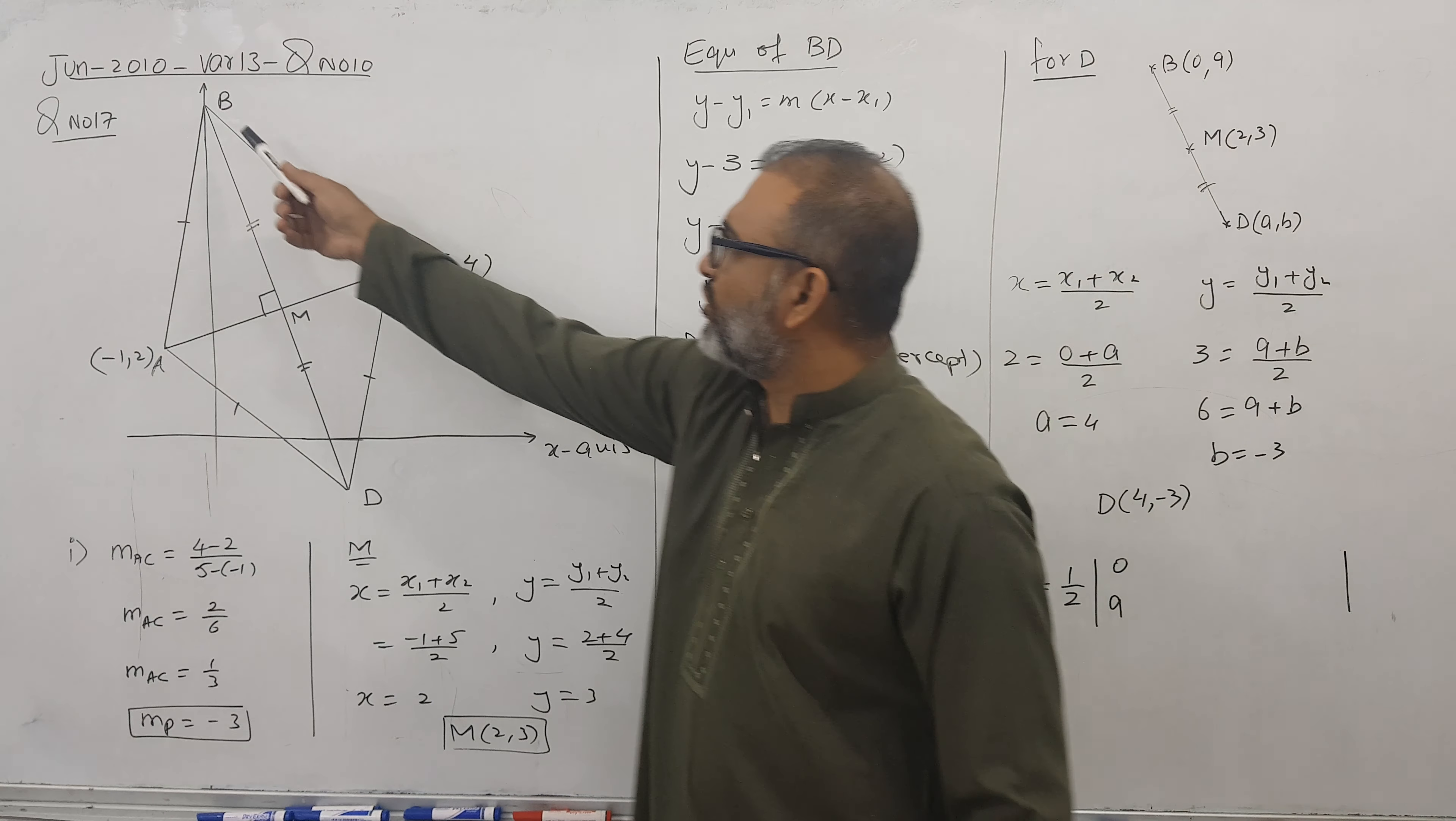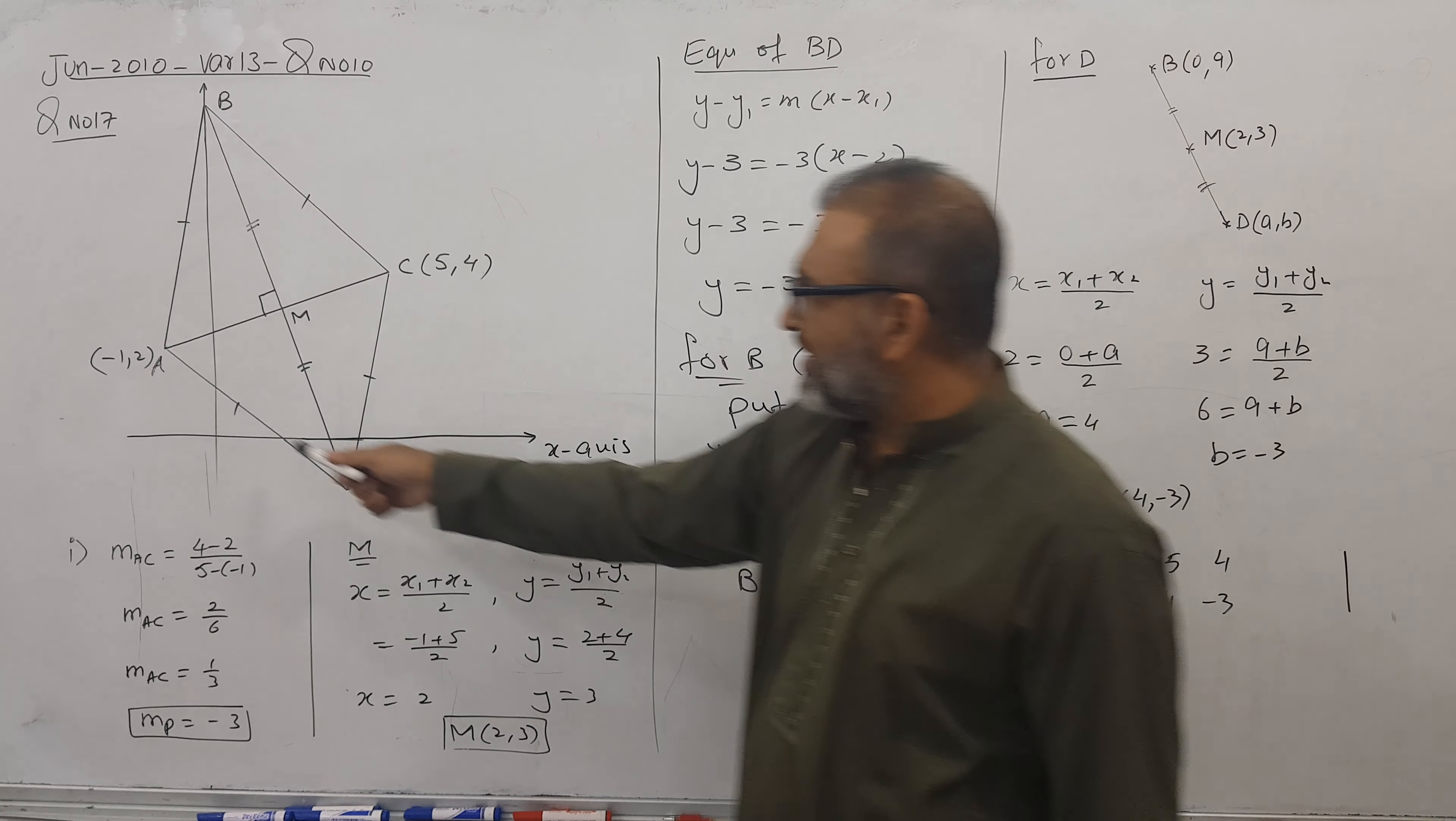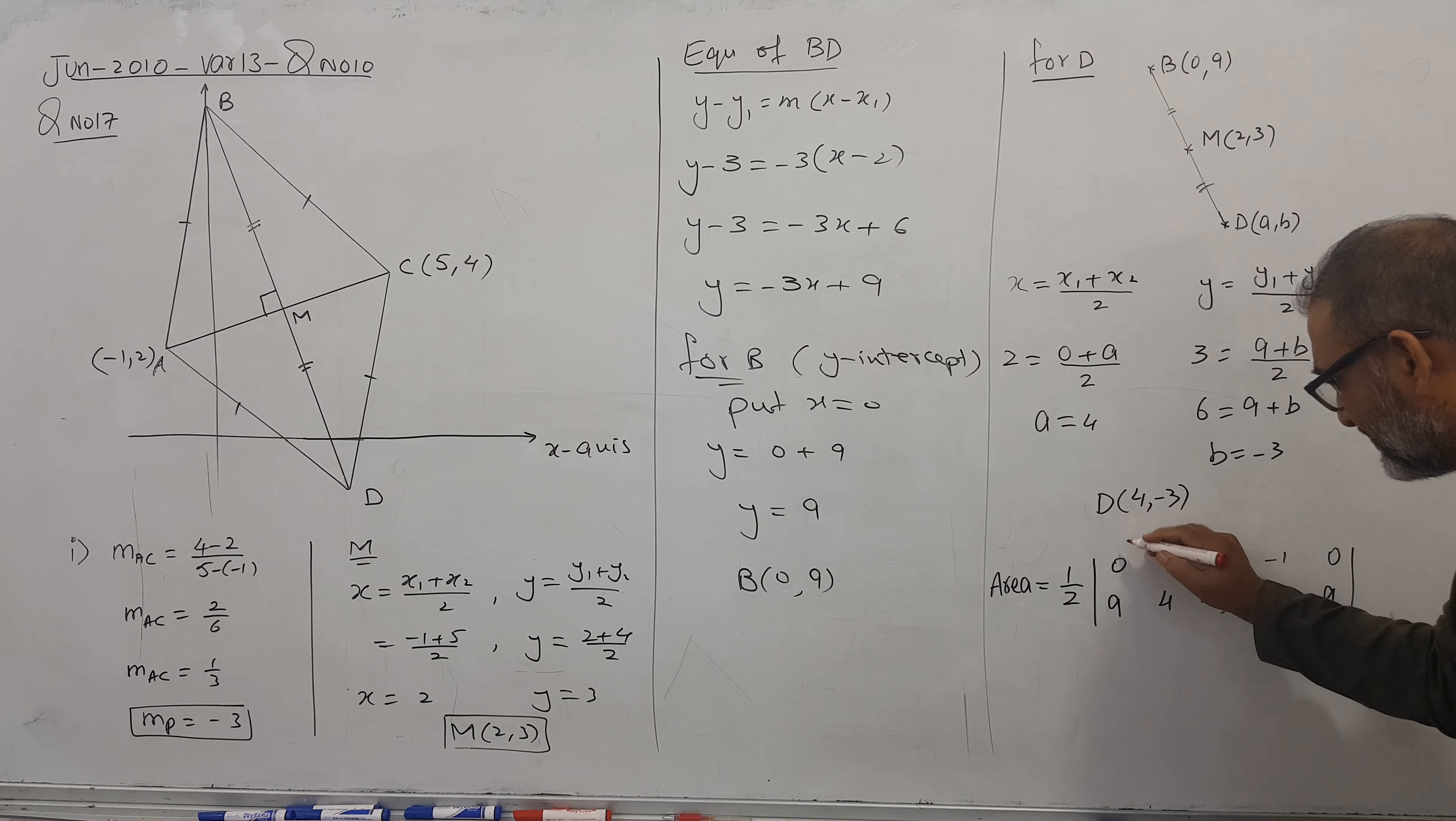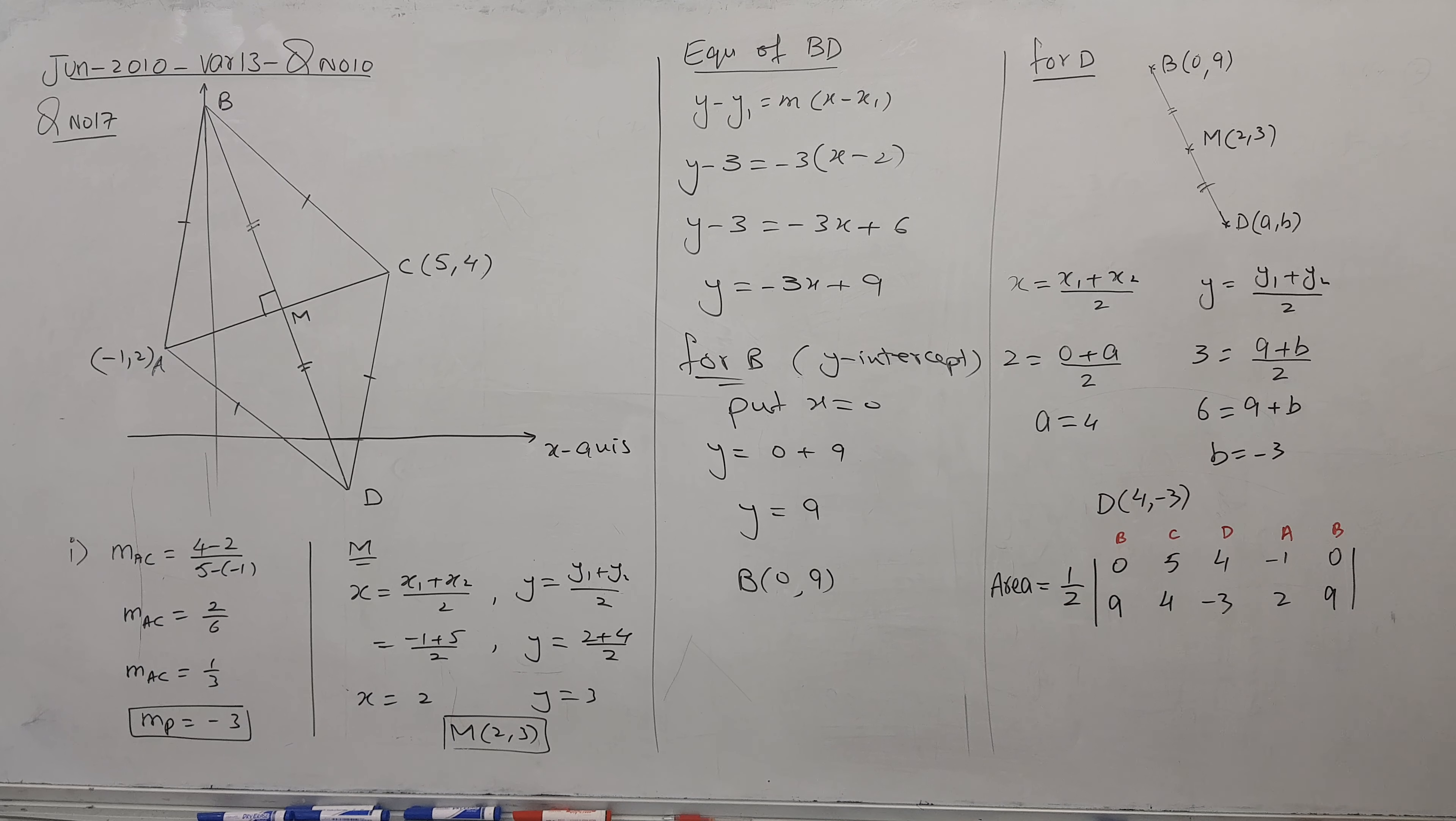After B, I will go to C coordinates: 5 up, 4 down. What is D coordinate? 4 up, minus 3 down. What is A coordinate? Minus 1 up, 2 down. And end again, 0 up, 9 down. I repeat - I started from B, then went to C, then D, then A, then B. It is important: where you start, you finish at the same point. So you can see, we start B coordinate and end at B coordinate.